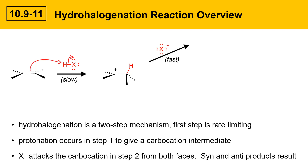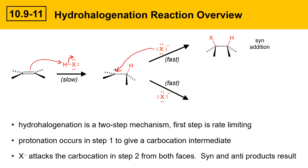First, let's take a look at the top face attack. The nucleophile comes in and attacks there. The product is what's called syn addition, where the X and the H were added from the same face of the double bond. The other possibility is that X⁻ might attack from the opposite face, from the bottom face. In that case, the product would be anti-addition, where the two groups were added from different faces of the double bond. Both products are possible in the hydrohalogenation reaction, and you'll get both.